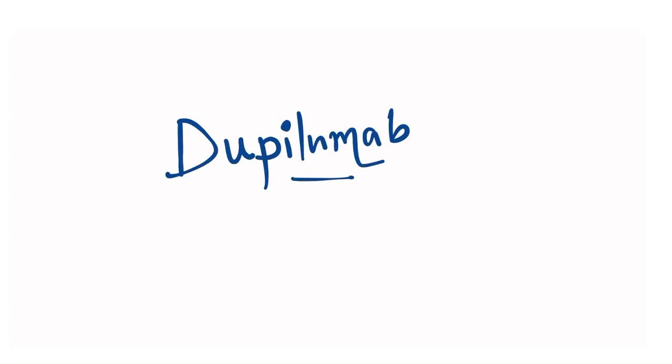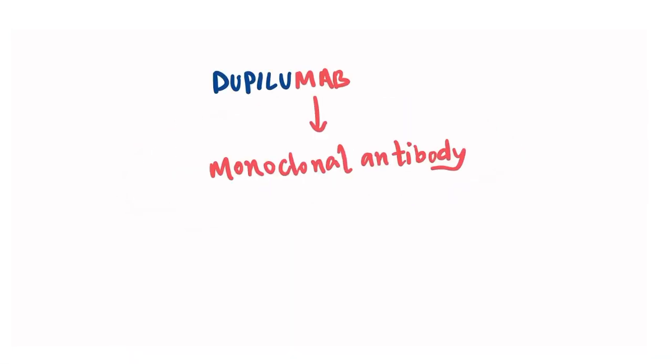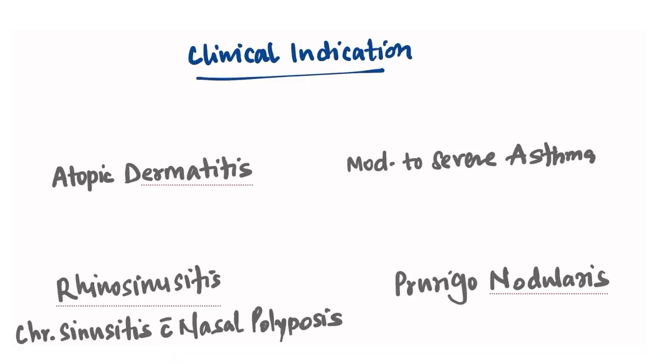Hi everyone, welcome back to the channel. In this video we are going to learn about a new drug known as Dupilumab. As the name suggests, there is MAB in the name, which means it is a monoclonal antibody. Let us now learn what are the clinical indications of this drug so that the mechanism of action becomes easy for us.